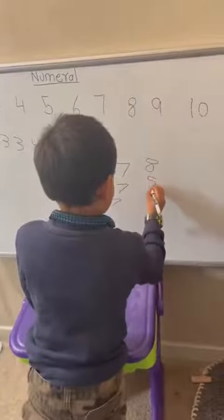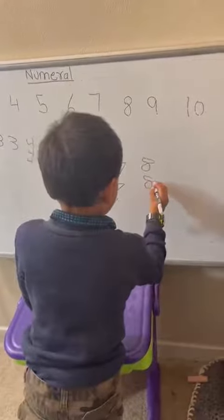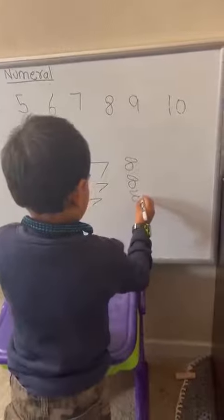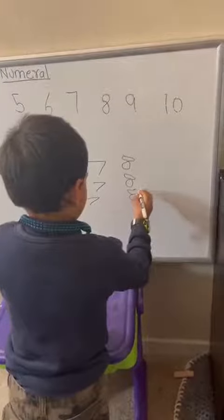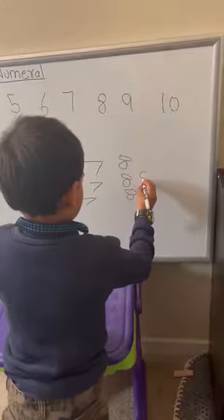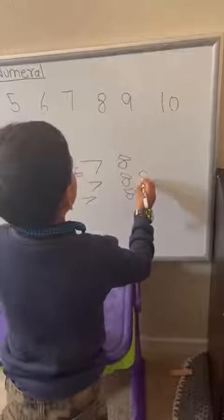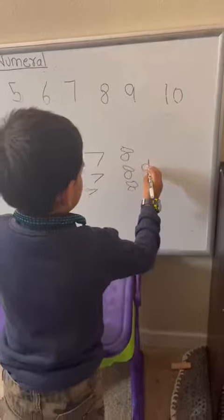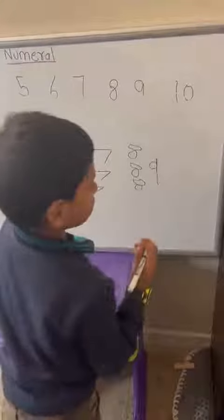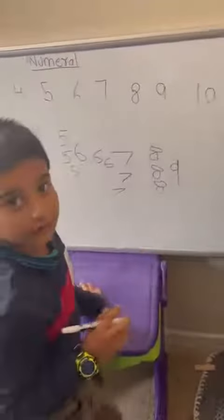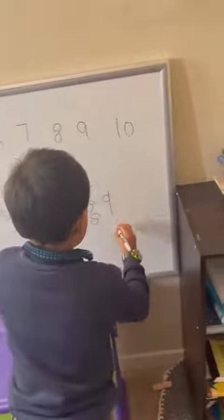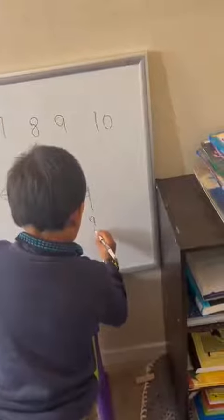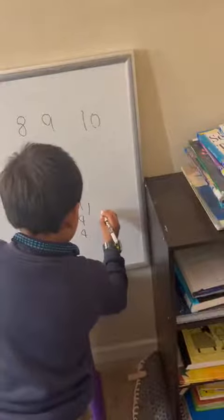To make the numeral eight. Make a circle, then align. To make the numeral nine.